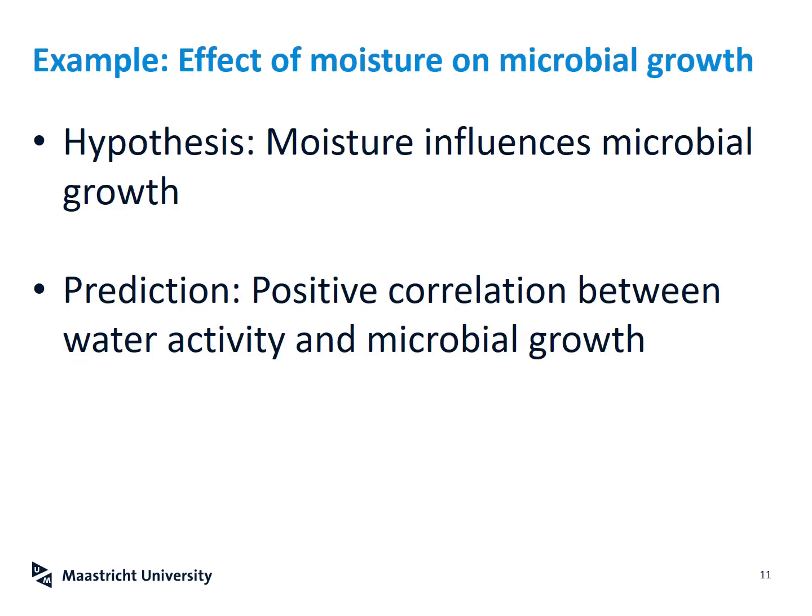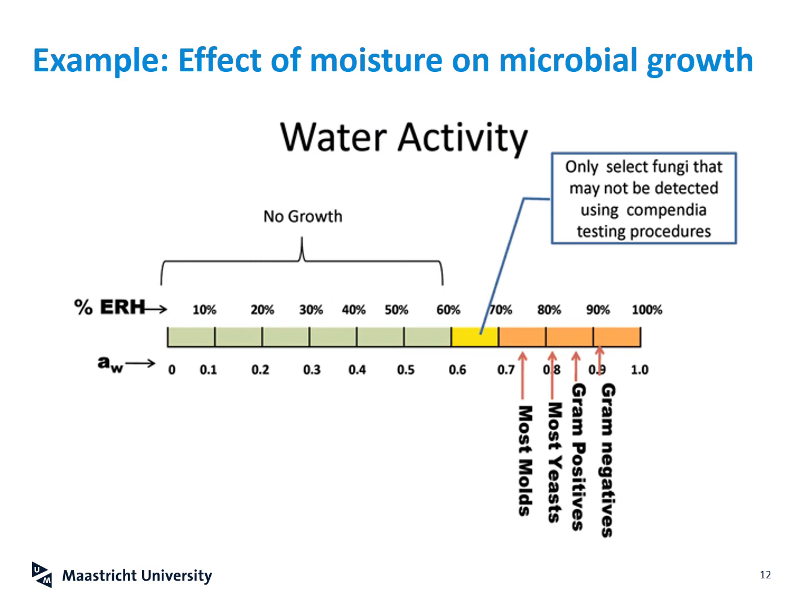Let's look at a more specific example. Say the phenomenon you're studying is that the more moist a room is, the more likely microbes are to grow there. Your hypothesis: moisture must influence microbial growth. You design an experiment where you increase the relative humidity in a room and observe how microbes grow. Your prediction, based on initial observations, is that there will be a positive correlation between water activity and microbial growth.